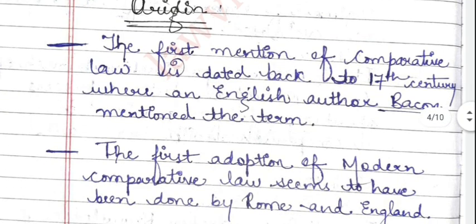Now an important aspect of this lecture is how comparative law originated — how it took birth — and also how it developed with the passage of time. We will begin from the 19th century through the 20th century. The first mention of comparative law is dated back to the 17th century, where an English author Bakken mentioned the term.